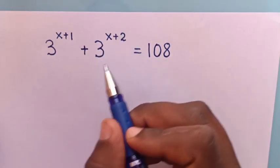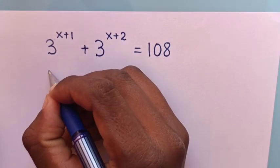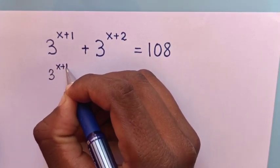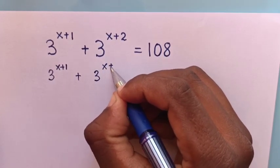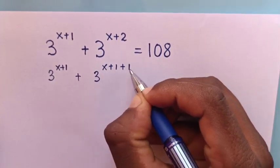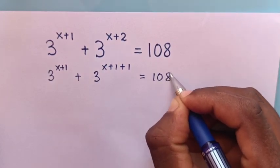First, from this exponent, to be like this one. Here in our equation it will be 3 power x plus 1 plus this 3 power x plus 1 plus 1 is equal to 108.